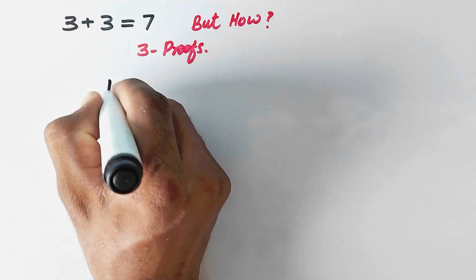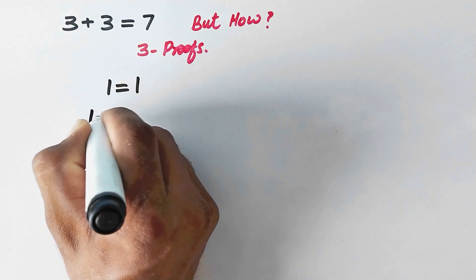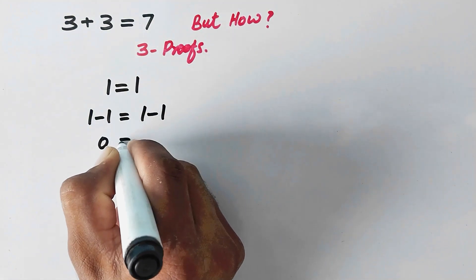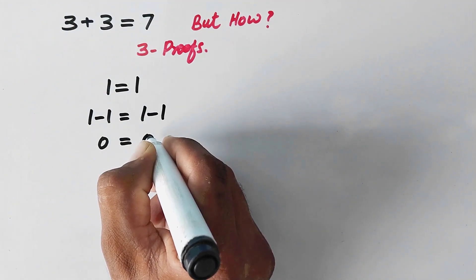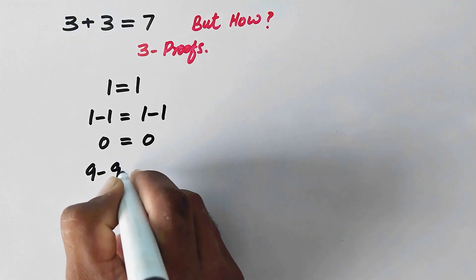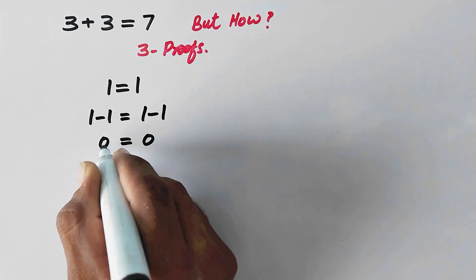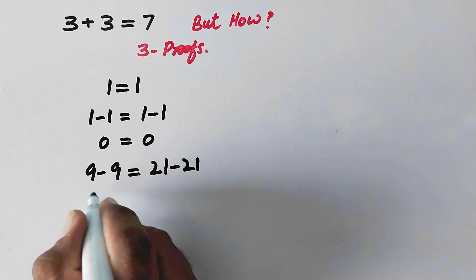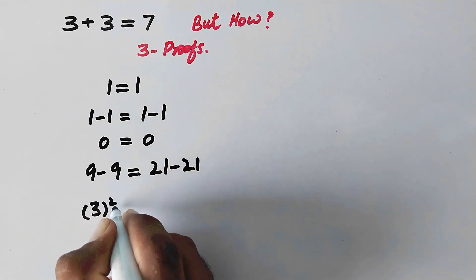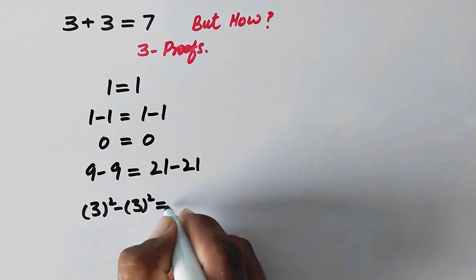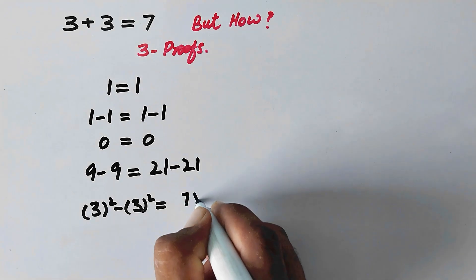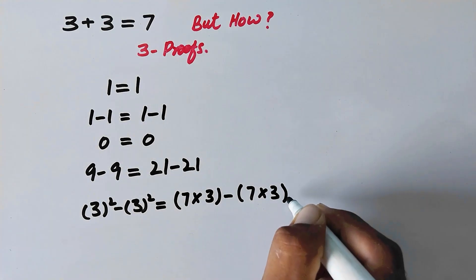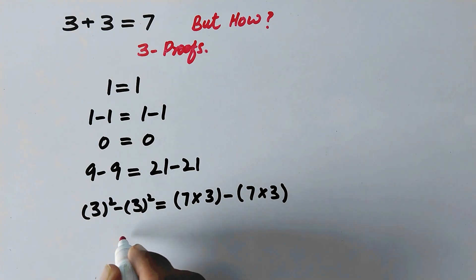So first of all, we will take 1 is equal to 1, or we can write 1 minus 1 is equal to 1 minus 1, which is equal to 0. Now, we can write 9 minus 9. Since 9 minus 9 equals 0 and 21 minus 21 is also equal to 0, we can write this 9 as 3 squared minus 3 squared, and 21 as 7 multiplied by 3 minus 7 multiplied by 3. Here we can apply an algebraic formula.